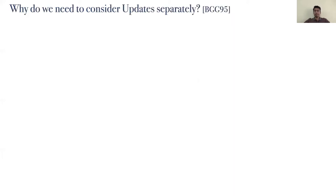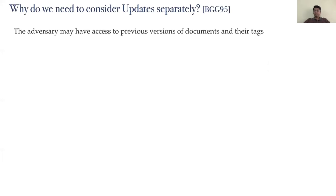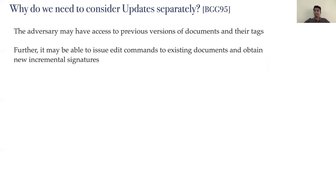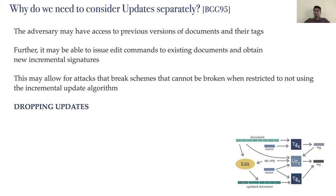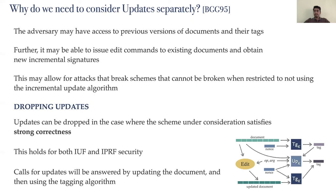Why do we need to consider updates separately? The adversary may have access to previous versions of documents and their tags, and may also issue edit commands to existing documents and obtain new incremental signatures. This may allow for attacks that break schemes that cannot be broken when restricted to not using the incremental update algorithm. However, updates can be dropped in the case where the scheme satisfies strong correctness, in which case update oracle calls can be replaced with tag oracle calls with the argument changed to the updated document.